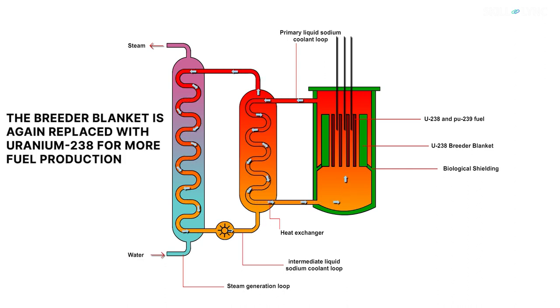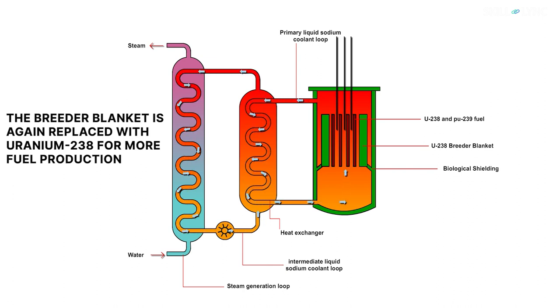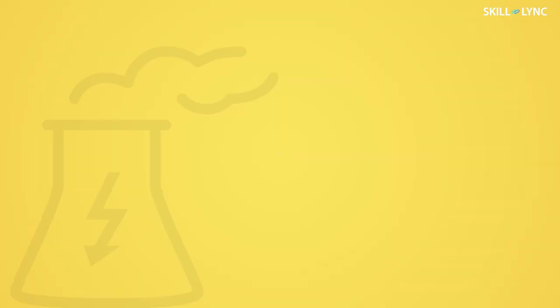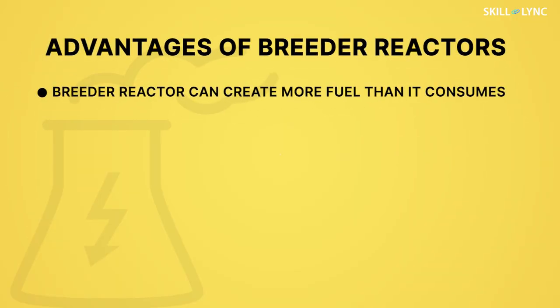The reactor can be refueled by natural uranium once all the uranium-238 is converted to plutonium-239. Thus, a breeder reactor can produce more fissile material than it consumes.